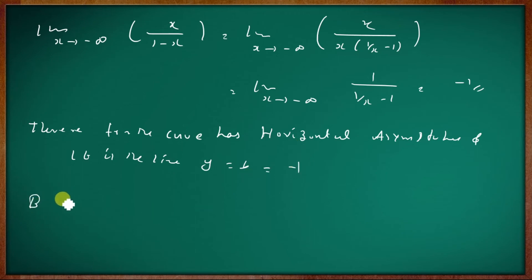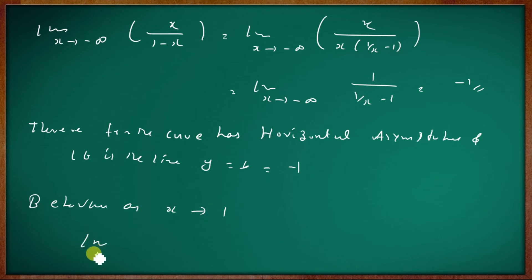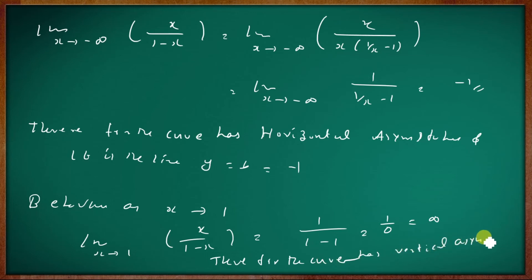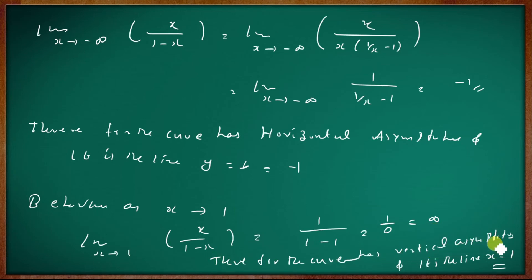Therefore, the curve has a horizontal asymptote at the line y equal to minus 1. The curve also has a vertical asymptote and it is the line x equal to 1.